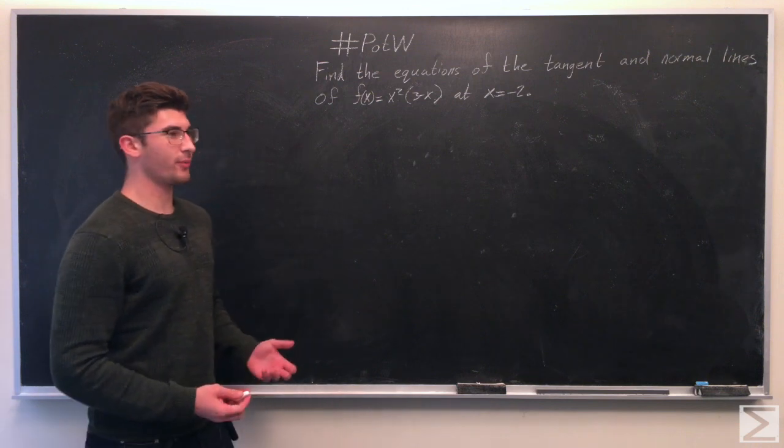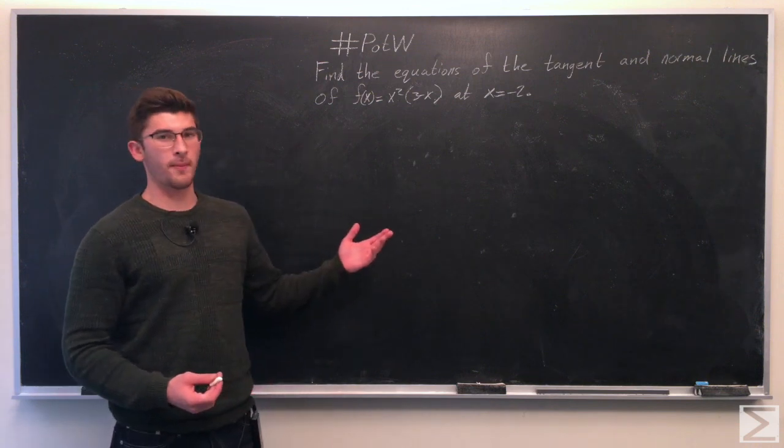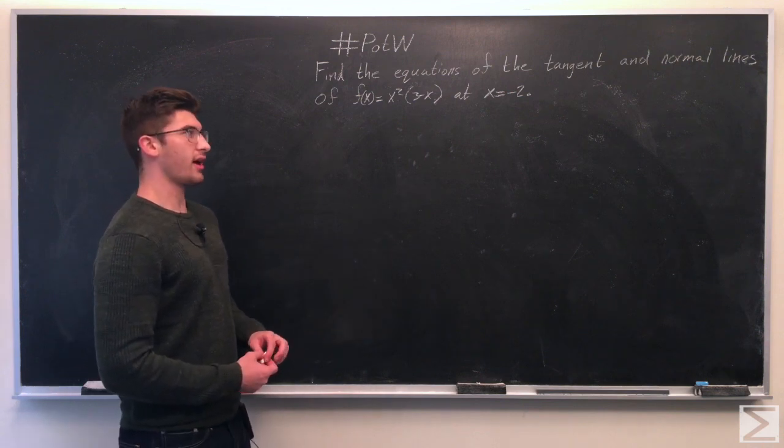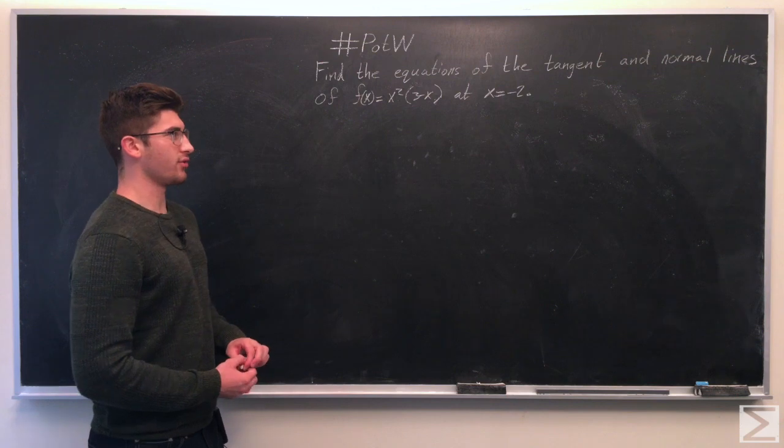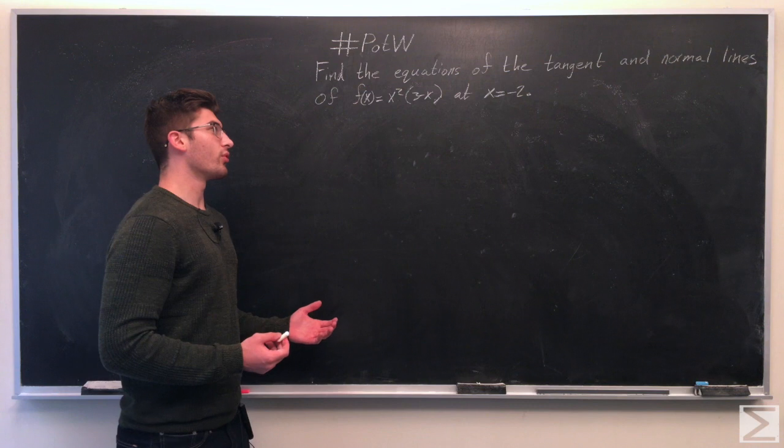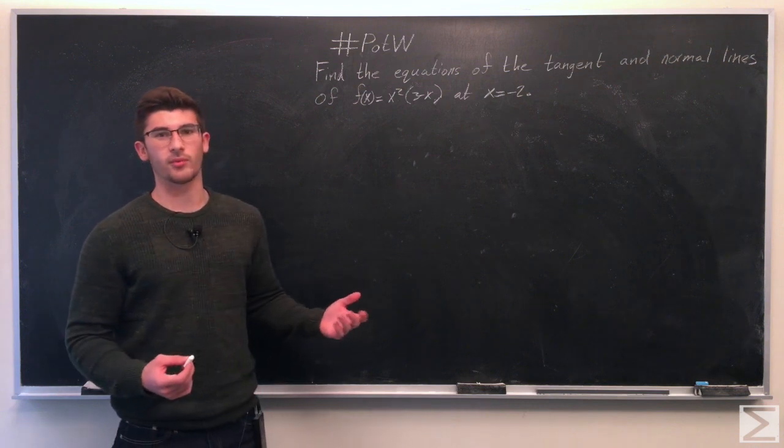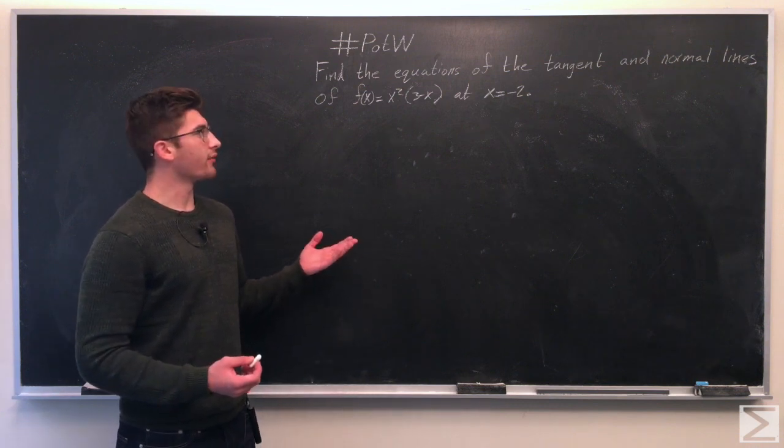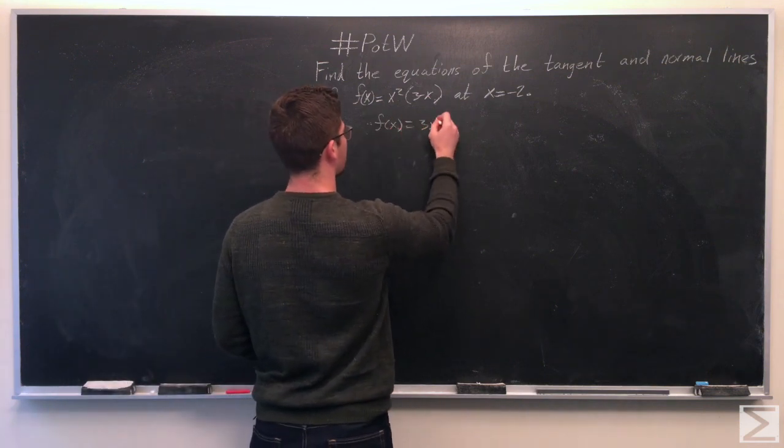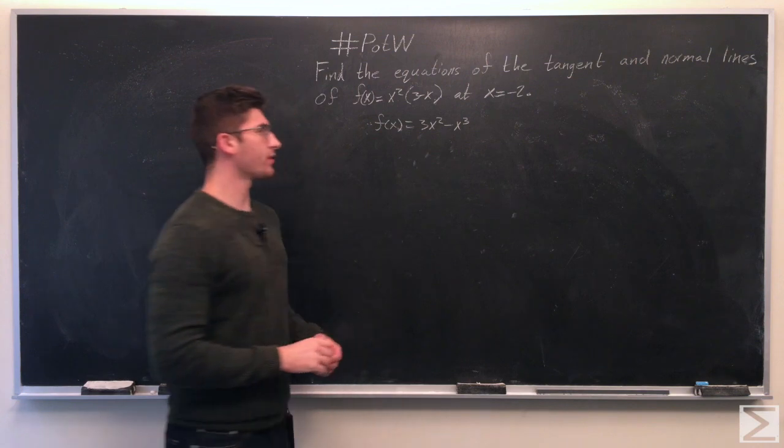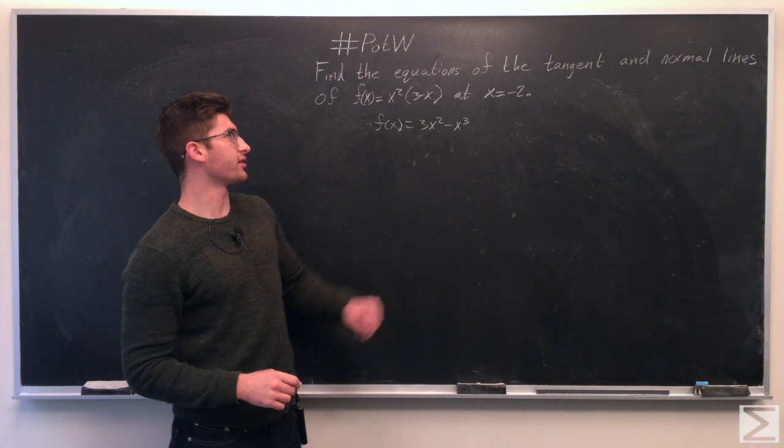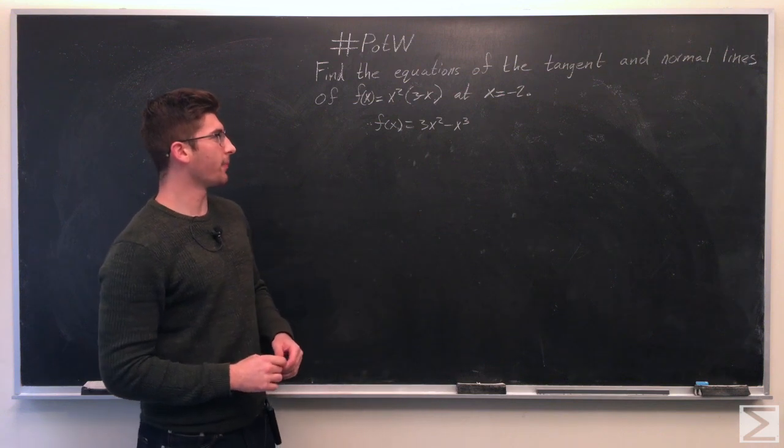So first, what we need to do is find—I'm going to start with the tangent line. So I'm going to find the slope of f of x at x equals negative 2. And when we find the derivative of this, we can either do the product rule or we can multiply it out. I'm going to multiply it out just because it's not that hard. So we multiply it out and we get f of x equals 3x squared minus x cubed.